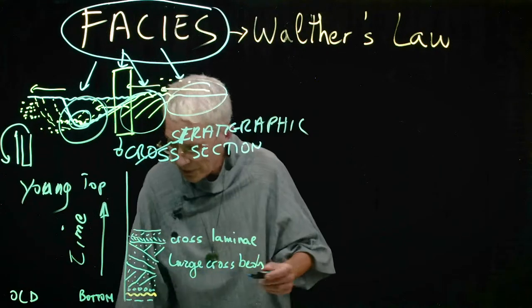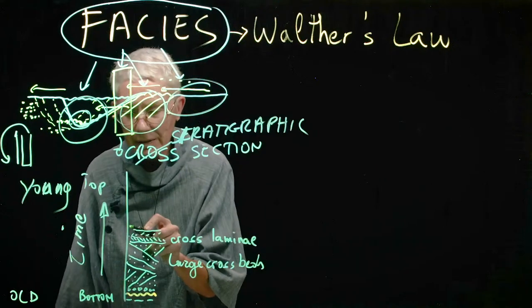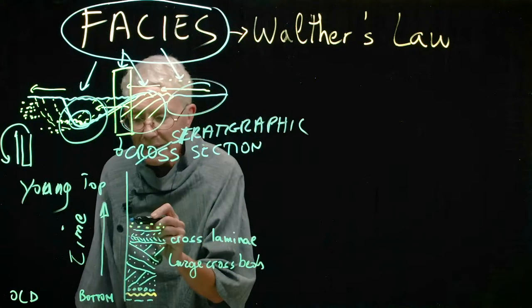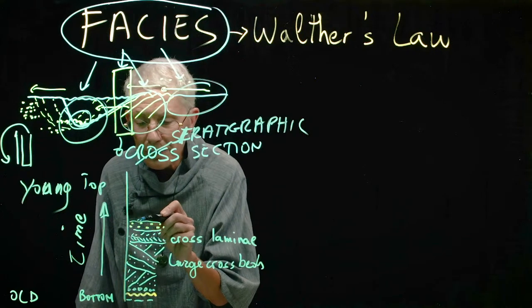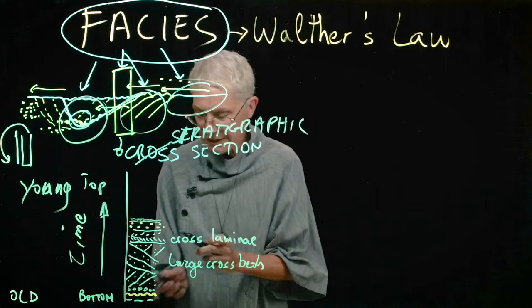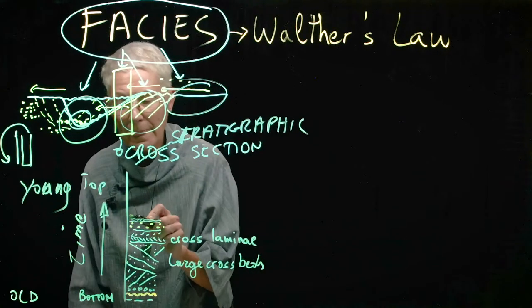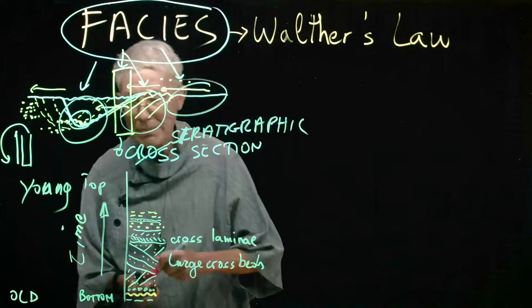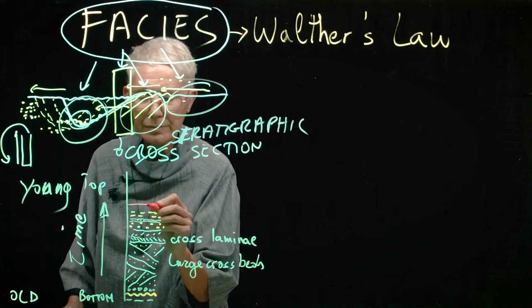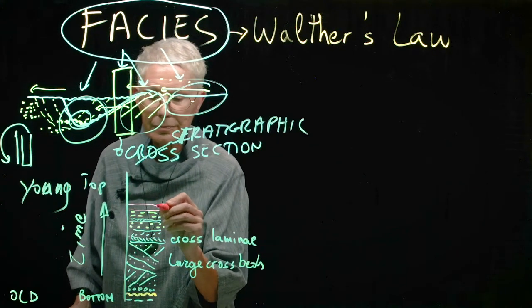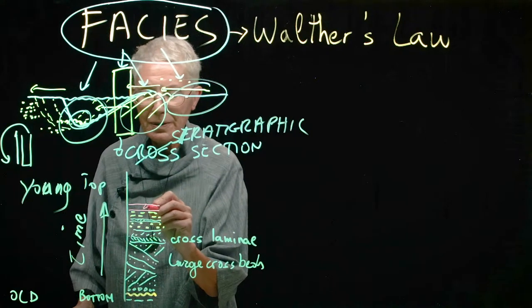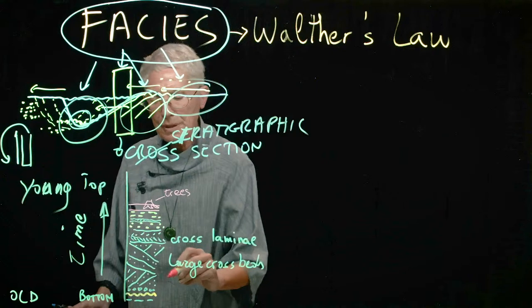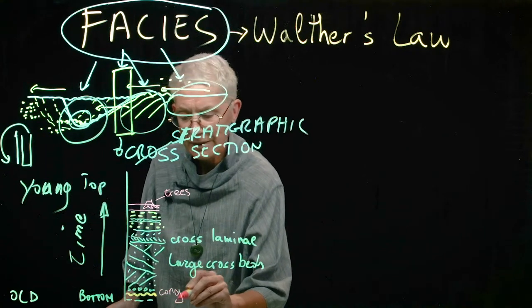And then on top of this, you have silt. Maybe with a little tiny bit of sand, with a little bit of cross lamina. Tiny. And then silt. And everything is capped by mud. And you might even find evidence of trees.